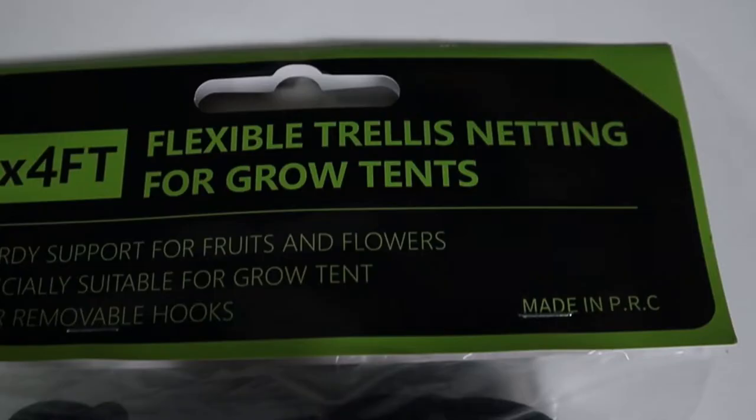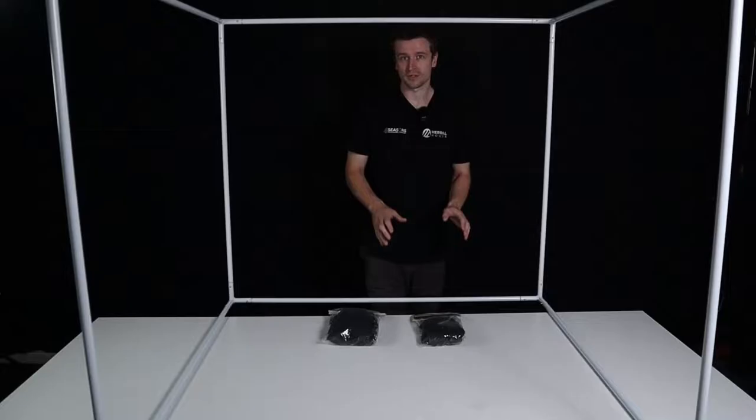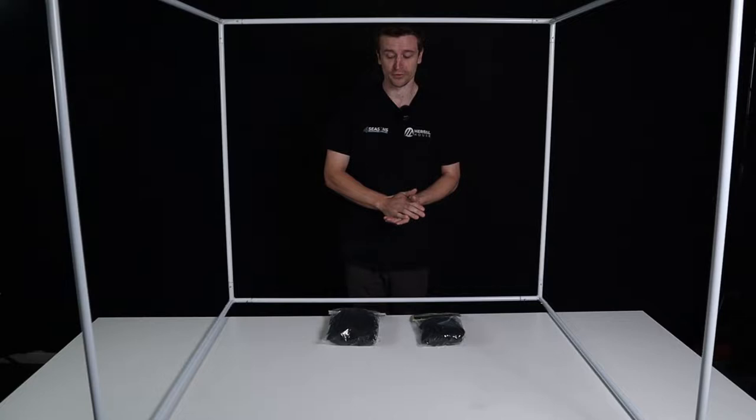We're going to show you the trellis netting that we offer here which is available in a 3x4 foot and a 3x3 foot. The 3x3 foot is pretty much perfect for everything up to a 1.2 meter by 1.2 meter tent which is essentially 4 foot by 4 foot. It does stretch to that no problem at all which we'll show soon.